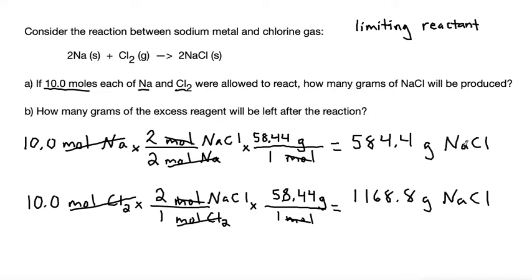So basically once my sodium runs out and it produces this 584.4 grams of NaCl, then the reaction is going to stop. So we know that my sodium is going to run out first and it's going to produce this amount of product. We always choose the smaller amount out of the two conversions of whichever product we are calculating for.